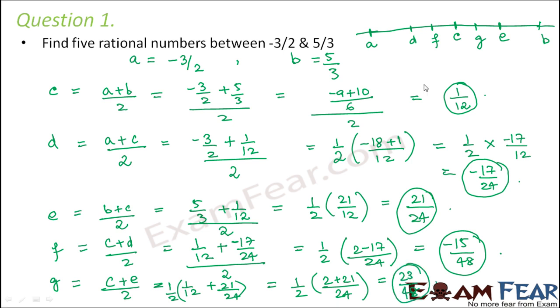So the five rational numbers D, F, C, G, E — that is -17/24, -15/48, 1/12, 23/48, and 21/24 — are 5 rational numbers that lie between -3/2 and 5/3.